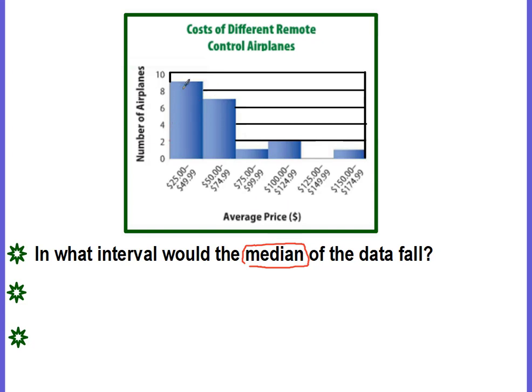Well, you can cross it off. You can see that there are nine that fall between the $25 and the $49.99 range. There are seven that fall between the $50 and $74.99 range. And then we have one, two, and one. So if we go through and we want to find the middle, we can add these up and say, okay, nine plus seven is 16, plus one is 17, 18, 19. There's a total of 20.